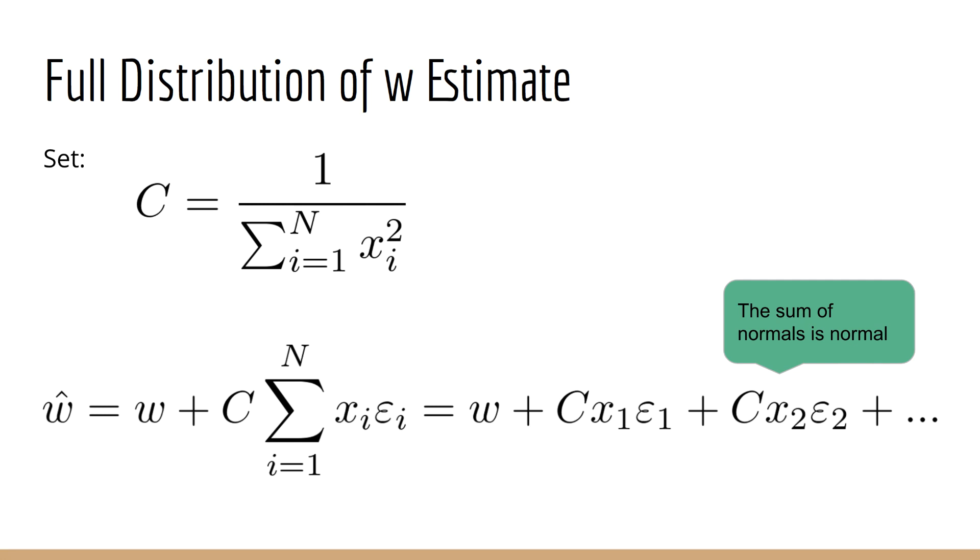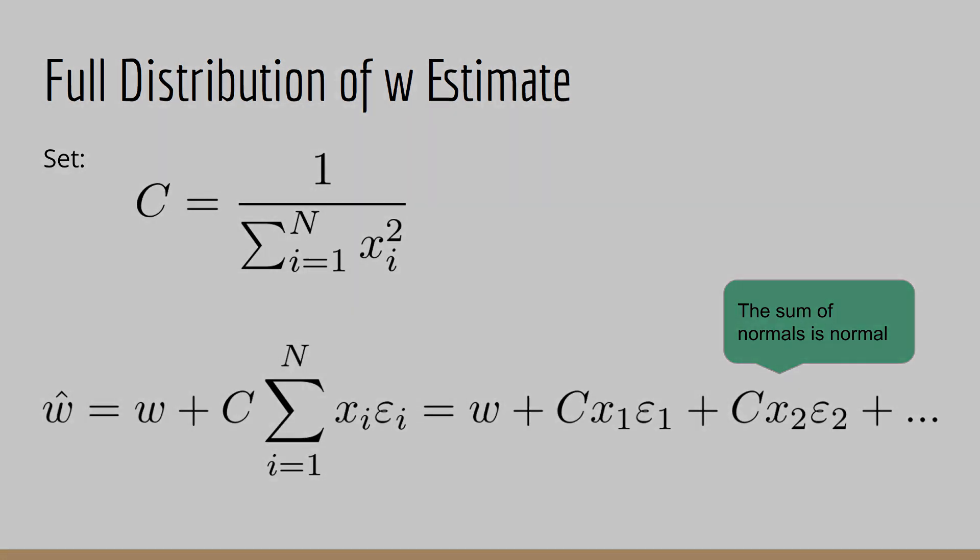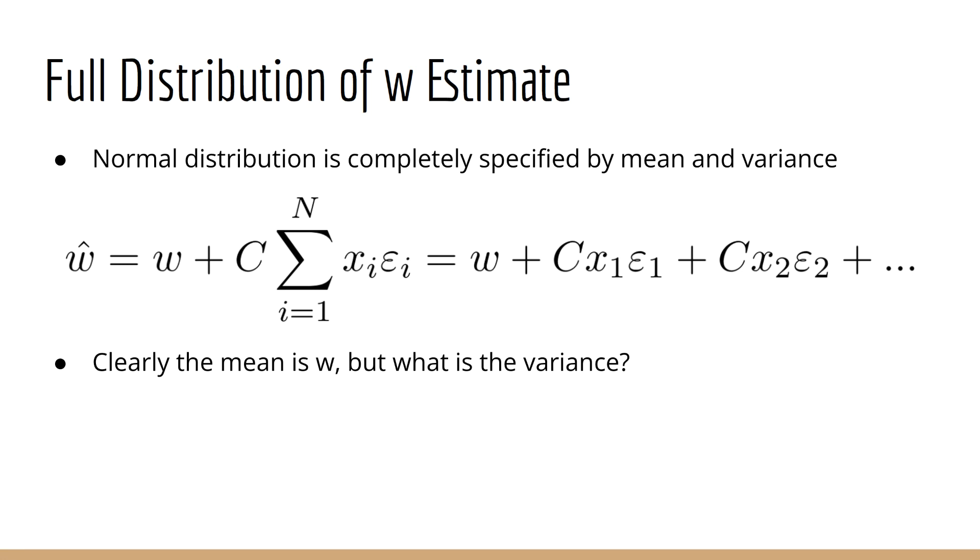What we can see right away is that w hat is the sum of normal random variables. And we know from our previous studies that the sum of normals is still normal. And therefore, we know that w hat has a normal distribution. Furthermore, we know that the normal distribution is completely specified by its mean and variance. We've already found its mean, which is w, so now all we need to do is find its variance.